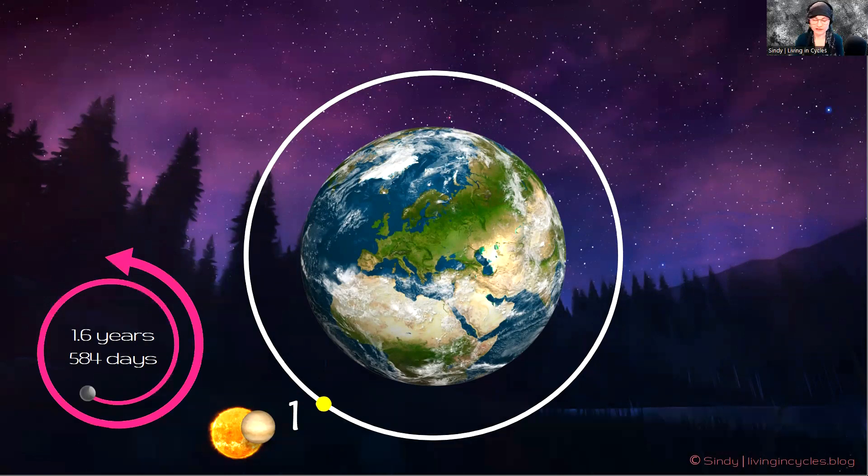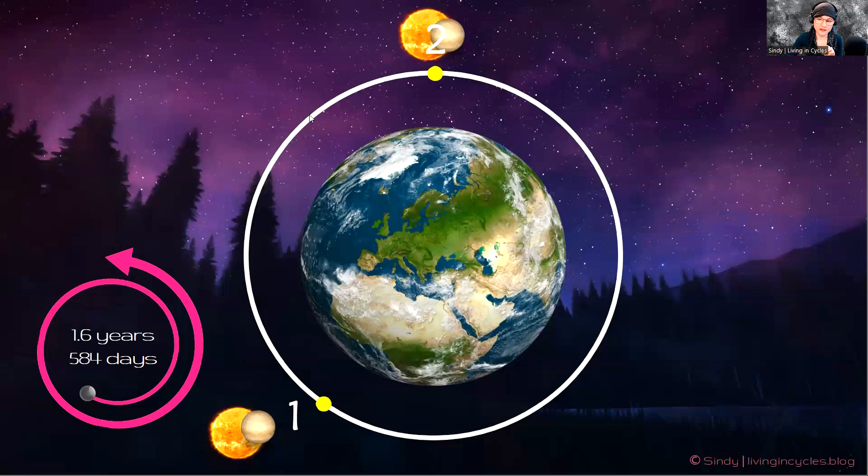So from this point, let's say from point 1, Venus was in an interior conjunction, after which she rises as the morning star. From this point, 584 days ahead, Sun and Venus will conjoin on point 2. Again, Venus will rise as the morning star. And from this point, again, one full round around the zodiac, and then again 0.6, they will conjoin again. Venus again will rise up as the morning star after this conjunction.